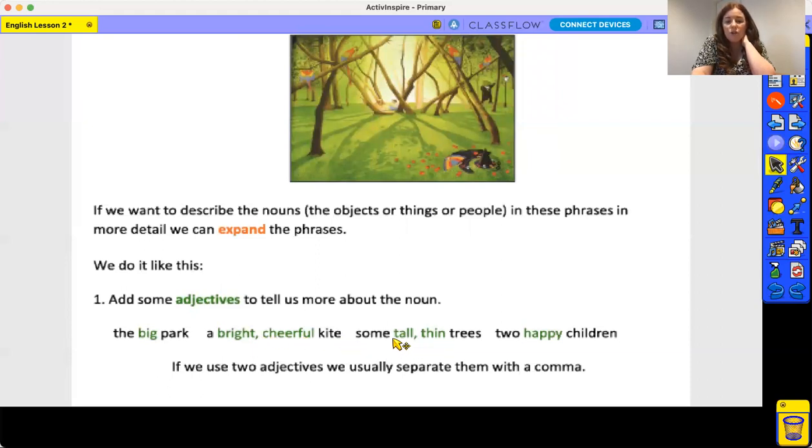A bright, cheerful kite. So there's two adjectives. Again we've done the same again: some small, thin trees—we've got two adjectives there separated by a comma—and two happy children. So if we use two adjectives like I just said, we usually separate them with a comma. But again, they are not sentences because we don't know what a bright, cheerful kite—what about it?